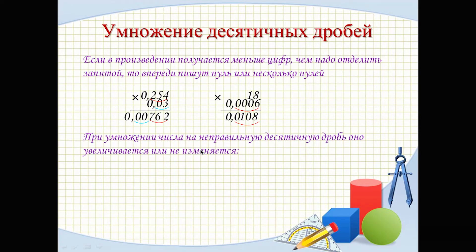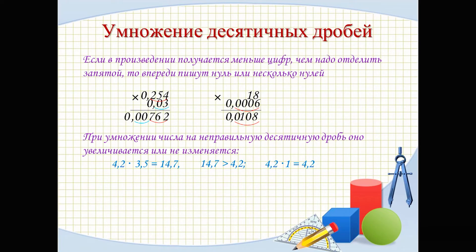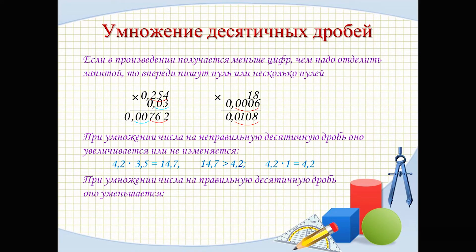When multiplying a number by an improper decimal fraction, it increases or stays the same. For example, 4.2 × 3.5 = 14.7, and 14.7 is greater than 4.2. 4.2 × 1 equals the number itself — they are equal. When multiplying a number by a proper decimal fraction, it decreases. For example, 4.2 × 0.35 = 1.47, and 1.47 is less than 4.2.